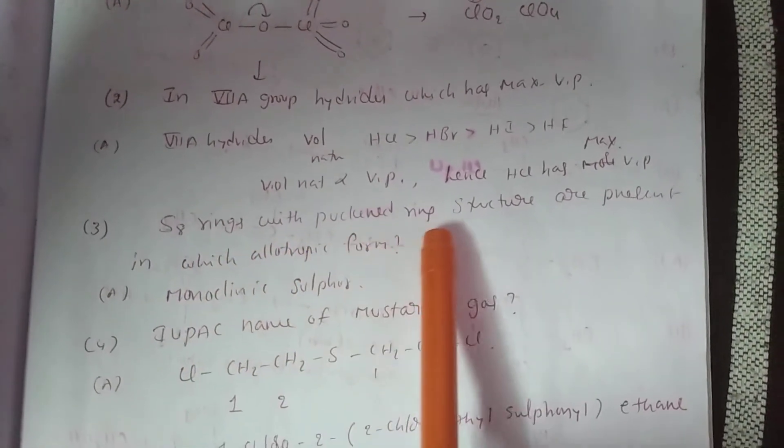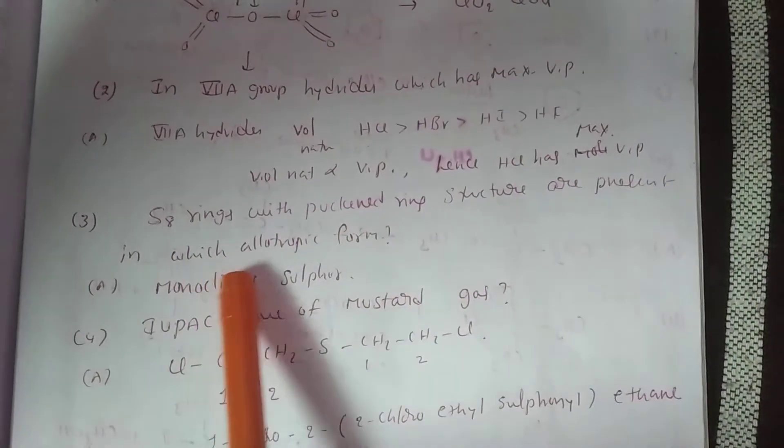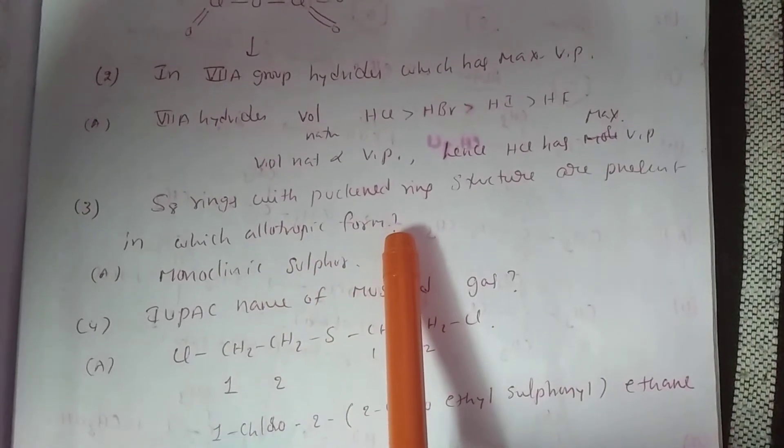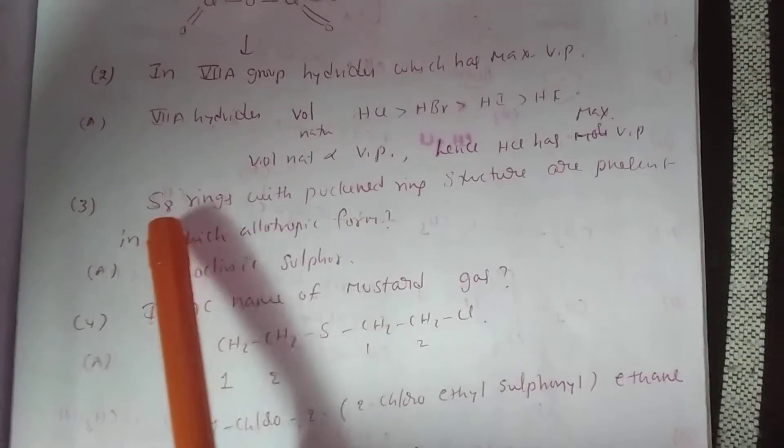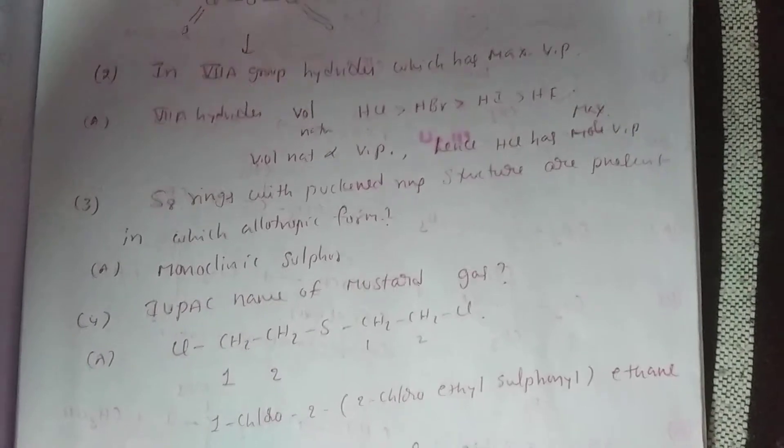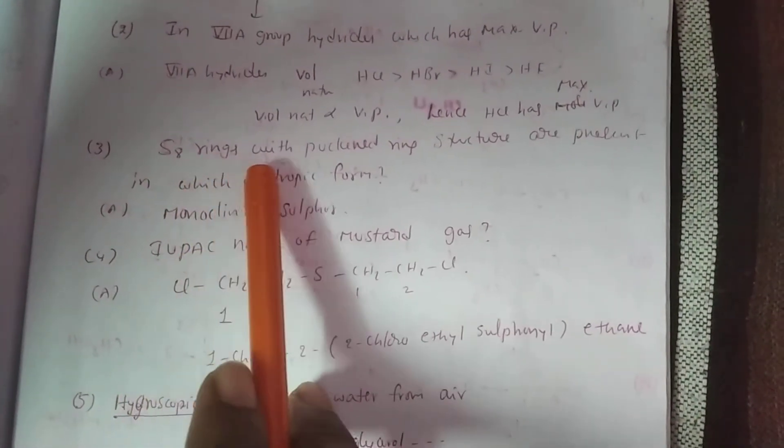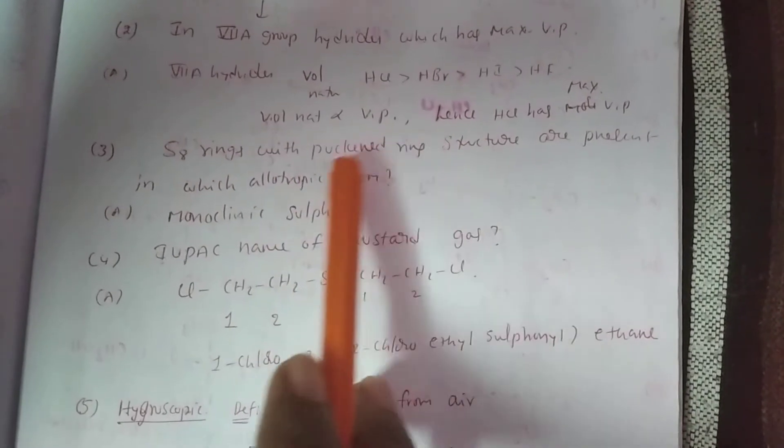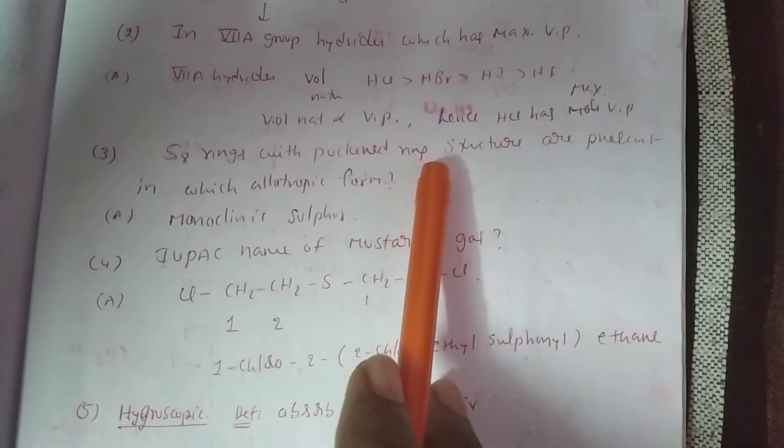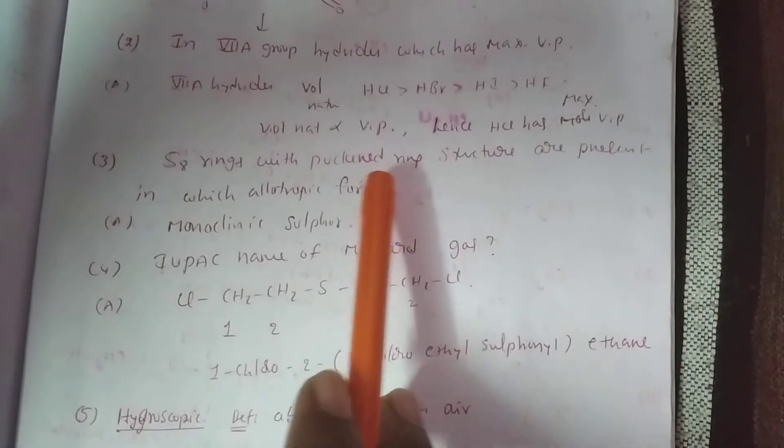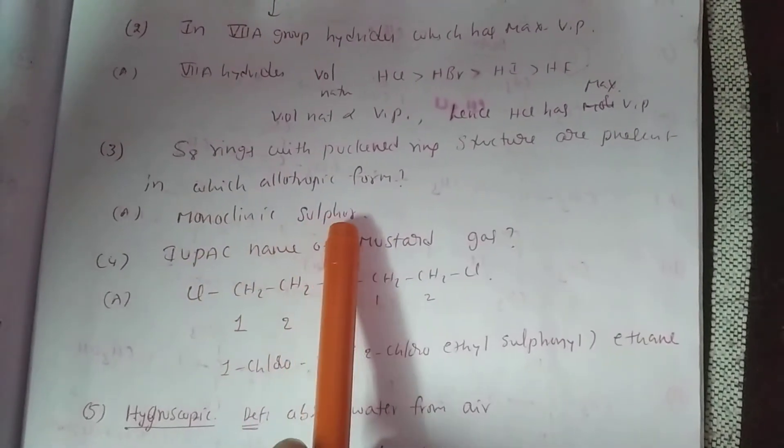Acid rings with puckered ring structure are present in which allotropic form? We know that sulfur exists in different allotropic forms: monoclinic, rhombic, S8. This structure, puckered ring structure or crown shape, is present in monoclinic allotropic form of sulfur.